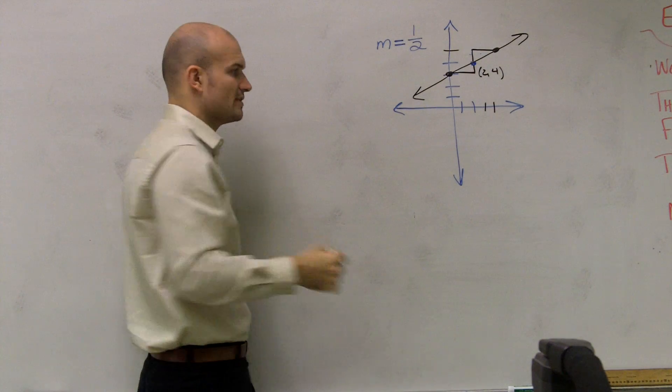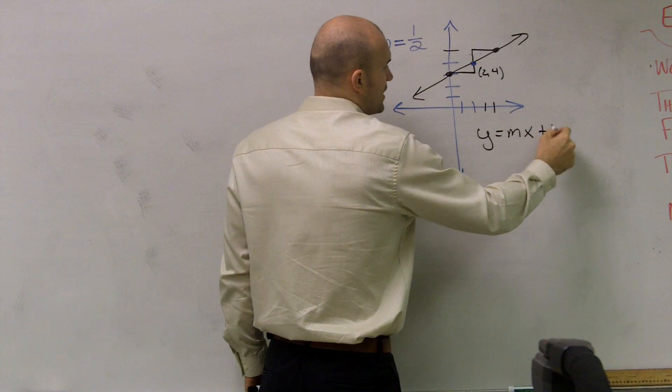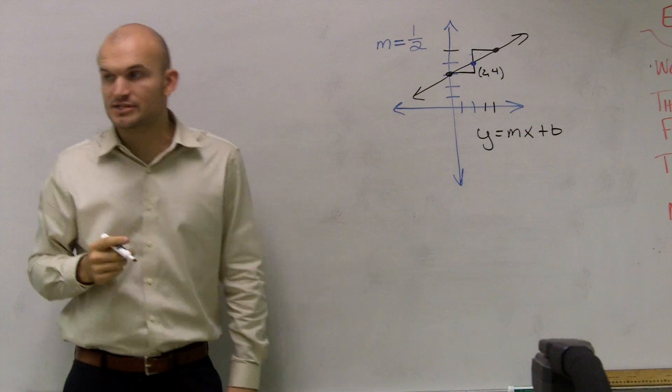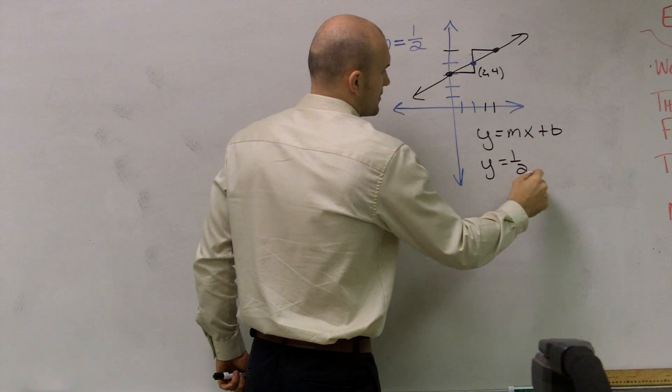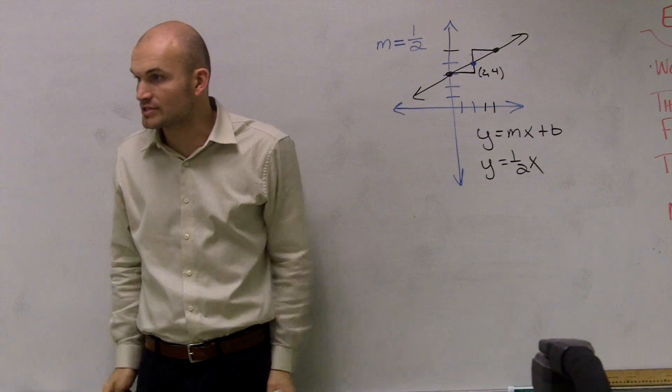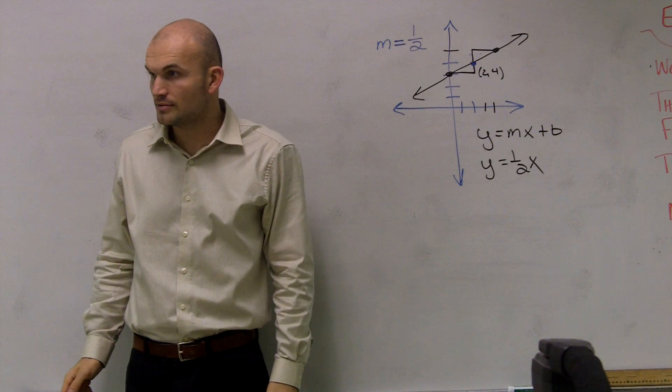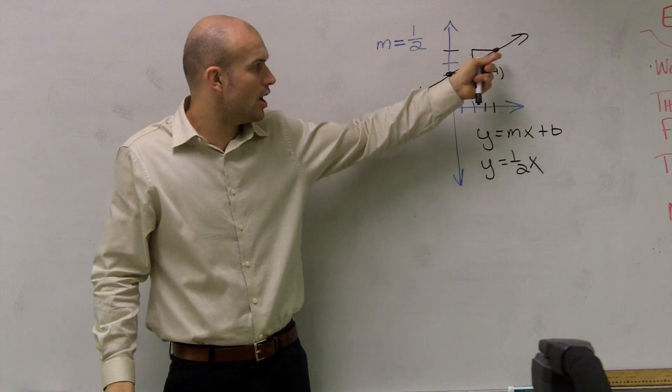Remember, if I want to find the equation of the line, right, remember, the equation of the line, you have to know what your slope is and what your y-intercept is. You already were given what the slope was. So they already told you m was 1 half. But you didn't know what the y-intercept was, did you? You didn't know. So you had to graph it.